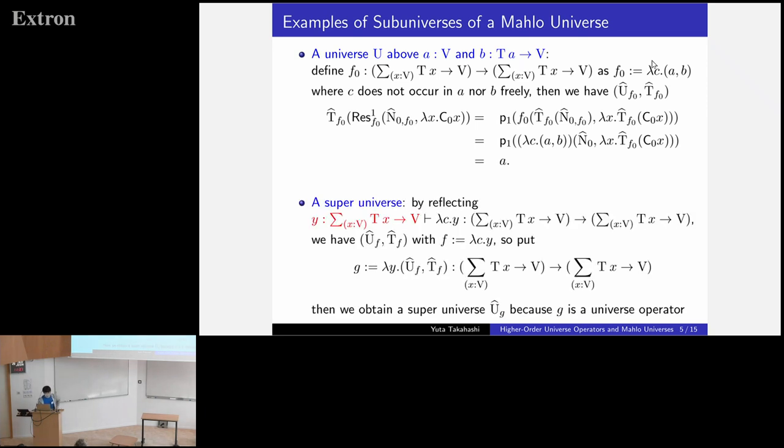Another example is a superuniverse, which is a universe closed under universe construction. In this case, we define an operator on families of sets in V in this way, lambda CY. And please note that here Y is a parameter of this type. Then, by reflecting it, we have subuniverse UF.